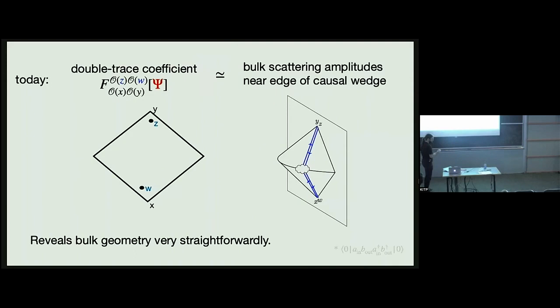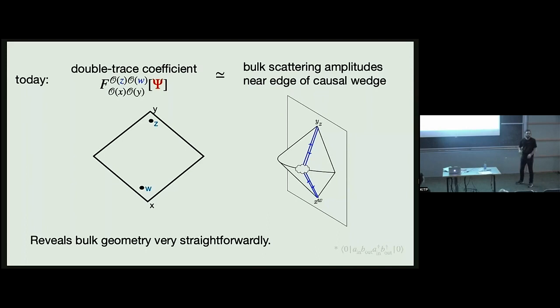Instead we'll be looking at the next term in this expansion. One basic claim is that if you look at the double trace coefficient in this OPE — which is like a four-point function in the background state psi — in some interesting corner limit, it's basically encoding some bulk scattering amplitude near the edge of the causal wedge. If you know this amplitude, it reveals the bulk geometry in a very straightforward way, no decoding needed.